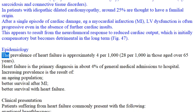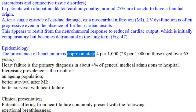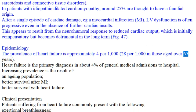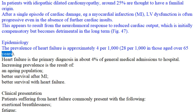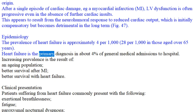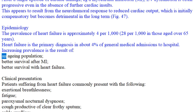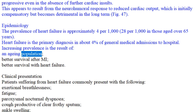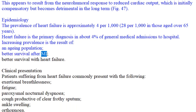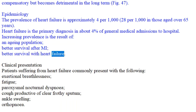Epidemiology: the prevalence of heart failure is approximately 4 per 1000, and 28 per 1000 in those aged over 65 years. Heart failure is the primary diagnosis in about 4% of general medical admissions to hospital. Increasing prevalence is the result of an aging population, better survival after MI, and better survival with heart failure.